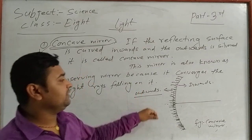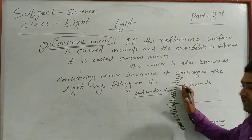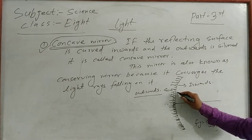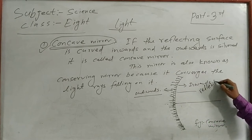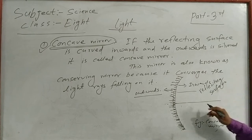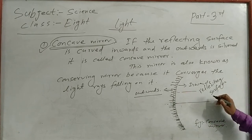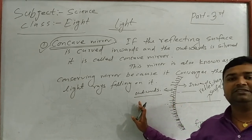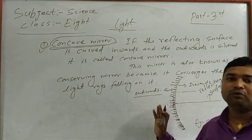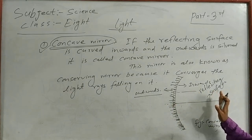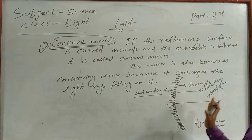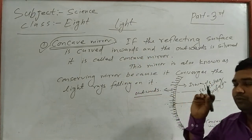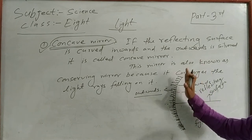In a concave mirror, the reflecting objects are kept on the reflecting side, because the inward side is the reflecting surface. The object should be kept on the reflecting side — you should not keep the object from the polished side, as then the image cannot be found. So the object should be kept on the reflecting side. Try to understand which one is the concave mirror: the inner curved side is the reflecting side and the outward side is polished.